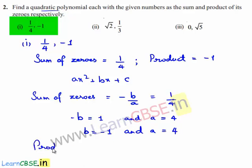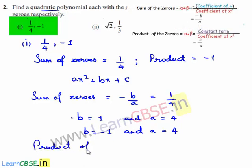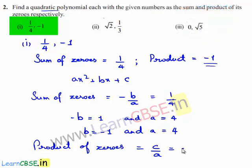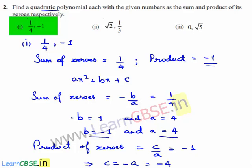Also, the product of zeros is equal to c/a, which equals the given product of -1. So we can write c = -a. We also found the value of a to be 4. Therefore, c = -4. So we got the values: a = 4, b = -1, and c = -4.